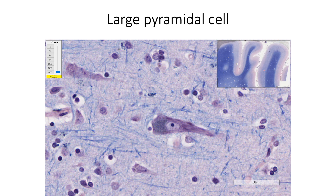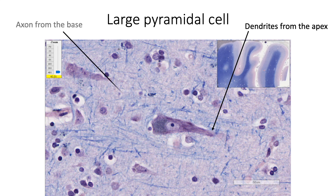In pyramidal cells, dendrites arise from the apex projecting towards the surface, and the axon arises from the base of the cell facing the white matter. The pyramidal cells of different layers contribute to different types of efferent fibers: axons of the smallest pyramidal cells in layer 2 form short association fibers; axons of small and medium pyramidal cells in layer 3 form long association and commissural fibers; axons of large pyramidal cells of layer 5 give rise to projection fibers, including corticospinal, corticobulbar, corticopontine, and corticostriate fibers; and axons of small pyramidal cells of layer 6 are the major source for corticothalamic fibers.